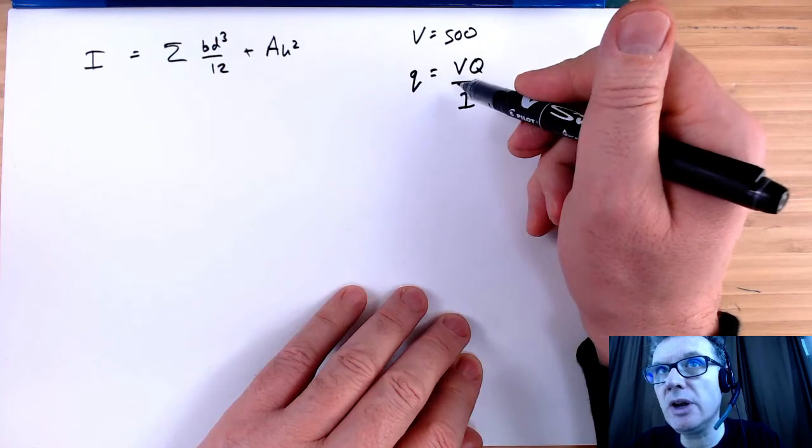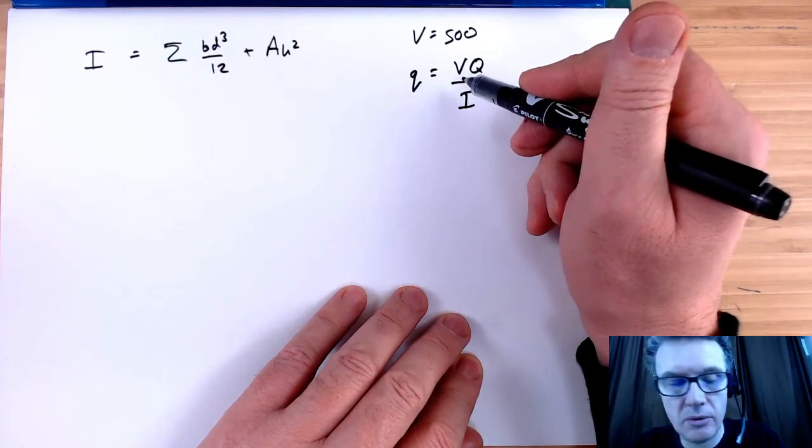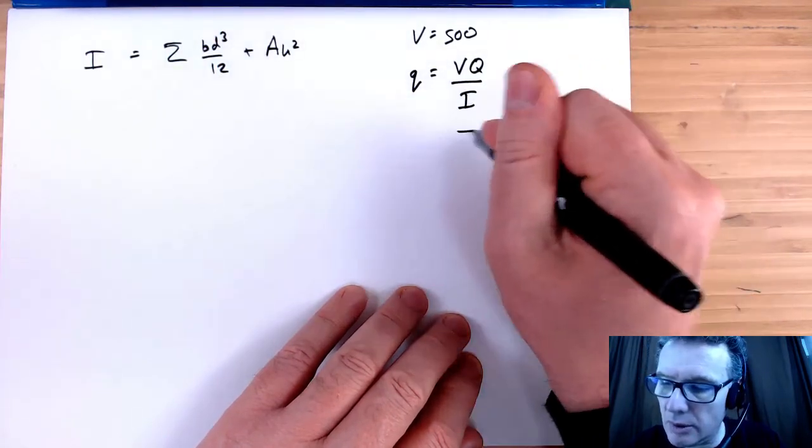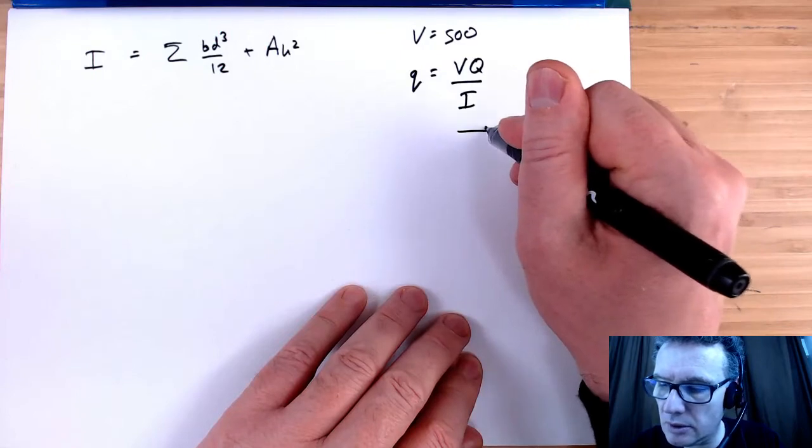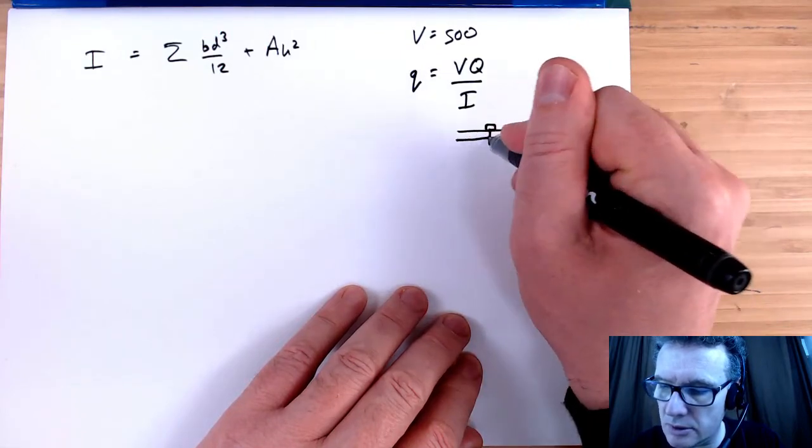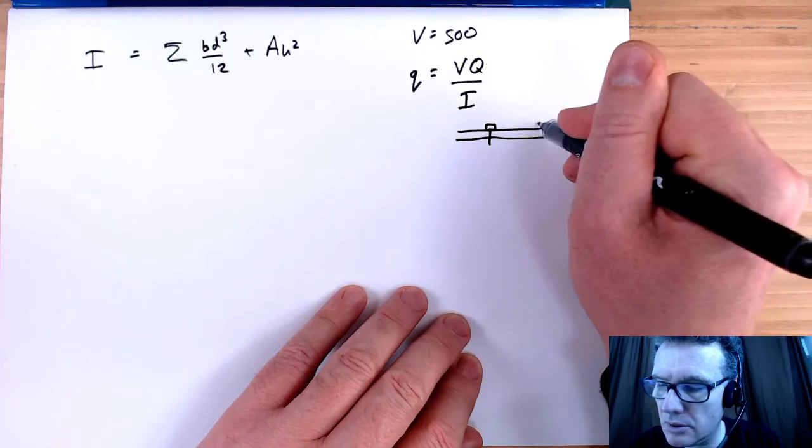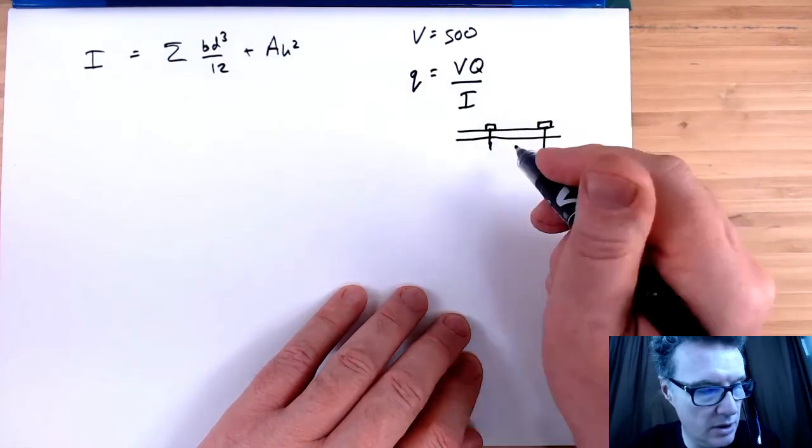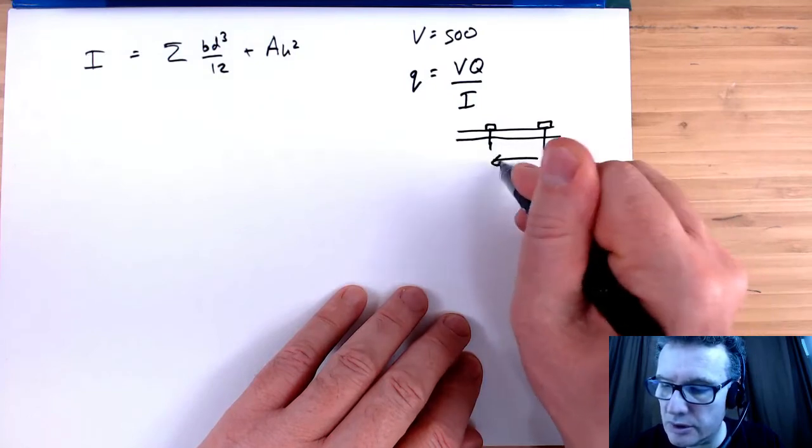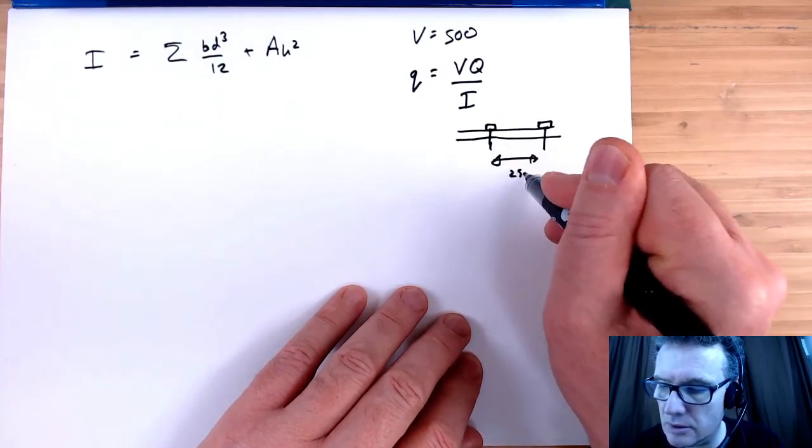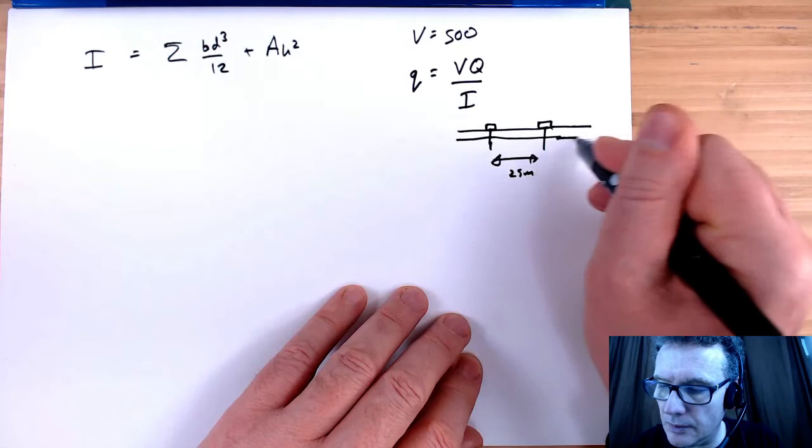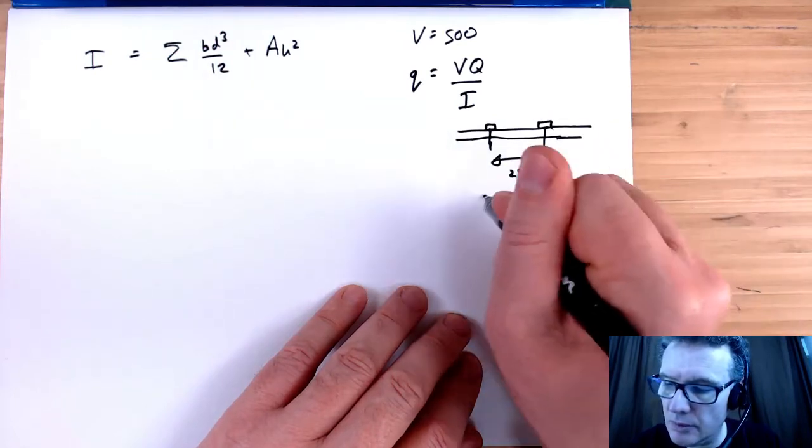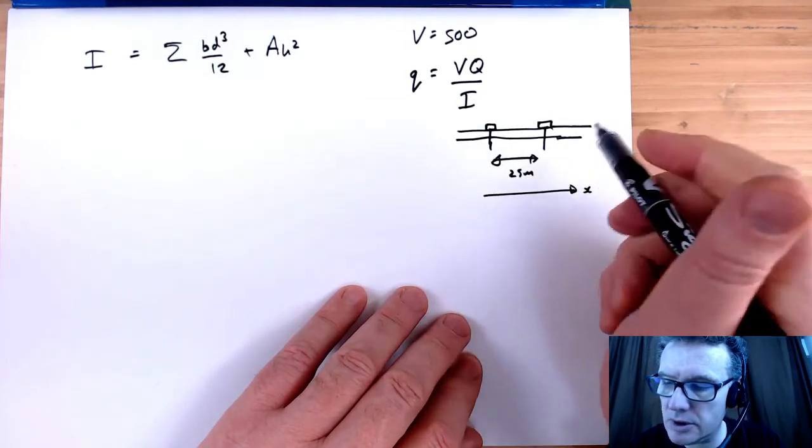If I look at my beam sideways on, I've got these nails every 25 millimeters. This is going off in each direction.